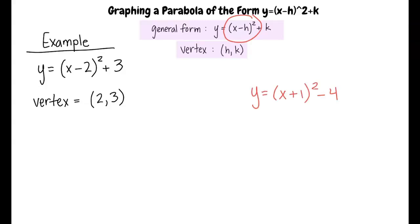On the other hand, if we had the function y equals x plus 1 squared minus 4, the vertex would be negative 1, negative 4, because x plus 1 is actually considered to be x minus negative 1, where negative 1 is the h.